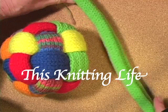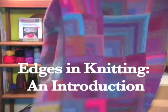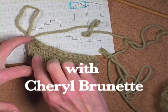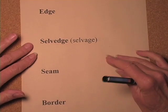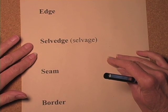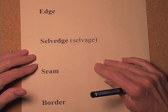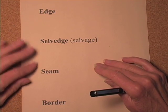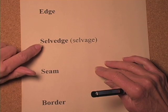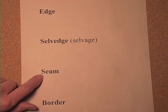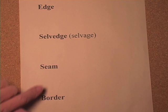Hi, I'm Cheryl Brunette and today we're going to take a good look at the edges of your knitting. There are a lot of different kinds of them and you need to treat them well. We're going to start by looking at four words or concepts that help us understand edges in knitting: edge, selvedge (which is spelled two ways), seam, and border.